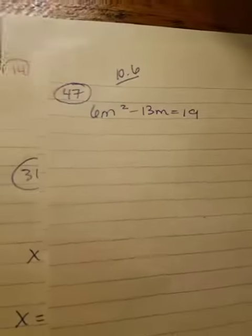Okay, this is number 47 on the 10-6 worksheet. 6m squared minus 3m equals 19.